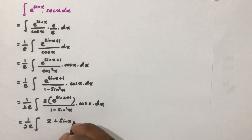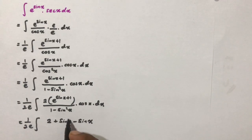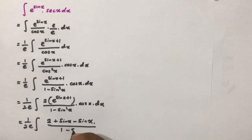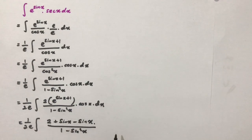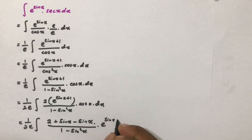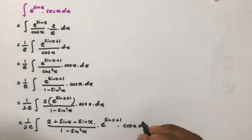I am going to write 2 in the numerator as 1 plus sine of x plus 1 minus sine of x — the sine of x terms cancel. So the numerator splits into 1 minus sine of x and 1 plus sine of x, and we still have e to the sine of x plus 1 times cosine of x dx.